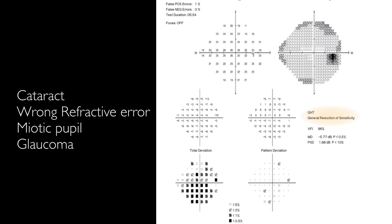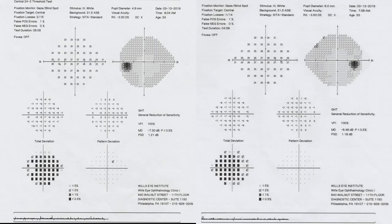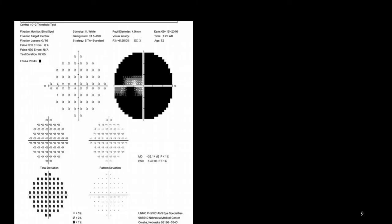But if we have a totally dark total deviation and a white pattern deviation plot, it's mainly seen in patients with cataract, wrong refractive errors, miotic pupil, and advanced glaucoma patients. This is an example of a patient with wrong refractive errors and generalized suppression, dark total, white pattern deviation plot.